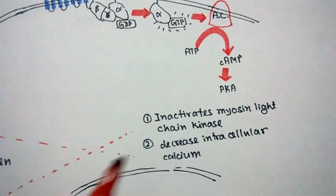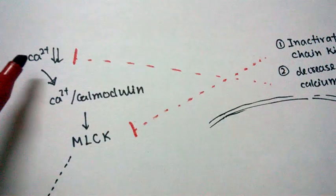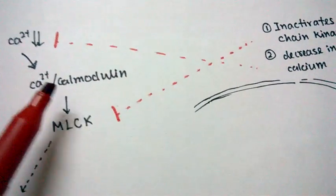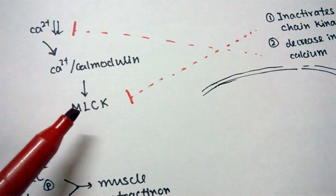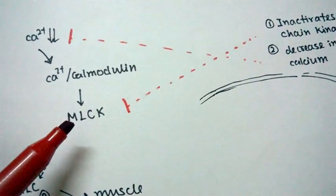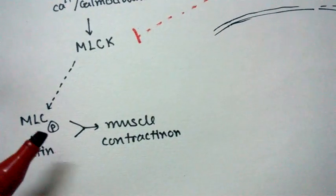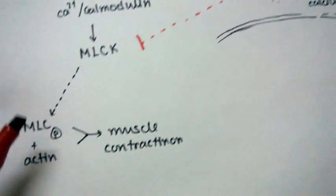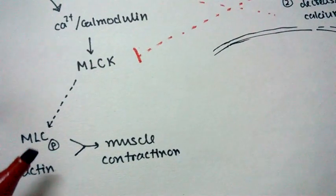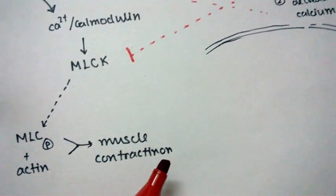In normal cases, calcium forms a complex with calmodulin, and calmodulin activates MLCK—the myosin light chain kinase. The myosin light chain kinase phosphorylates the myosin light chain. When myosin light chain is phosphorylated, it can form cross bridges with actin, and the result is muscle contraction.